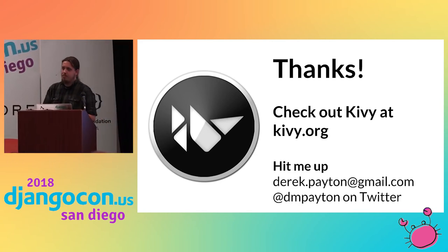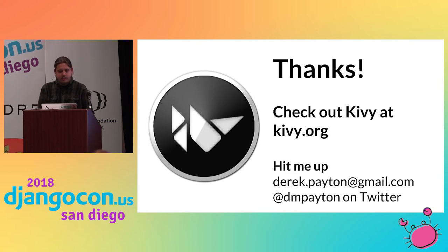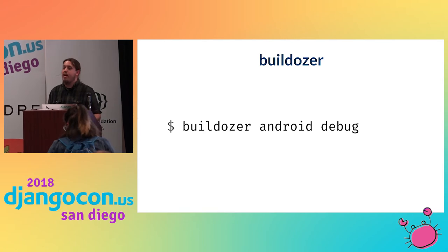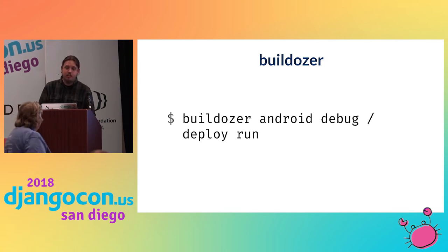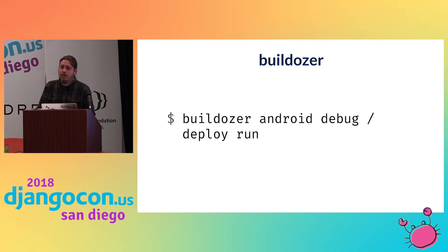Question: once you've built your app, how do you get it to your phone? That takes us back to Buildozer. This command builds your app in debug mode, deploys it to your phone, puts the APK on your device, and then runs it directly — a similar command exists for iOS. That's pretty much all that's needed: a single command to get everything up and running on your device.